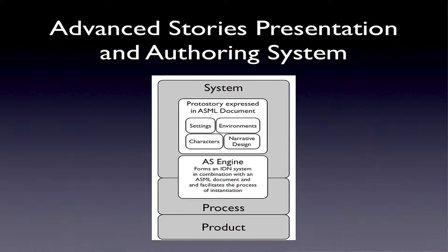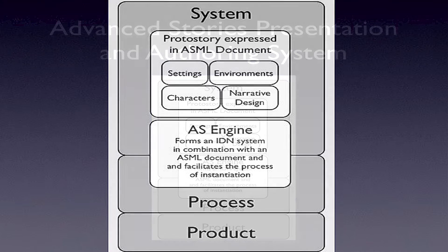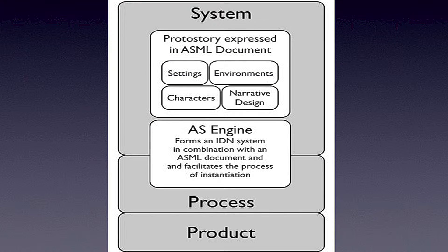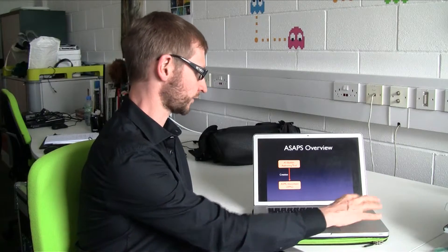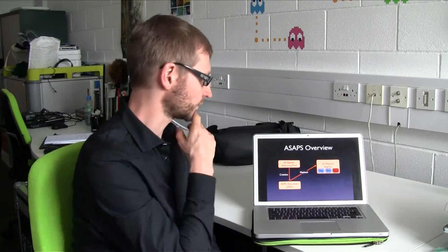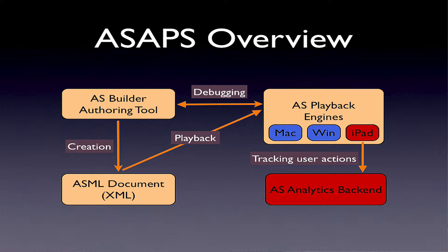This is a schema of the overall architecture based on the concept of interactive narrative as consisting of system, process, and product. The overall system consists of the Advanced Stories Builder, the offering tool, which creates XML documents, which are then played back by the AS playback engine.